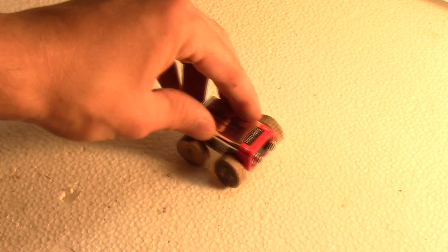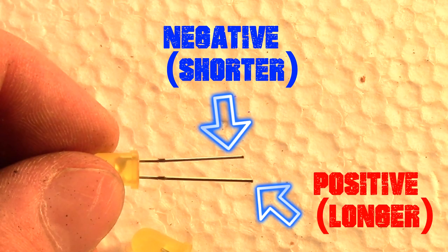Once the car body is done it is time for the LEDs. Before wiring you must first know that typically the longer leg is the positive lead and the shorter leg is the negative lead.